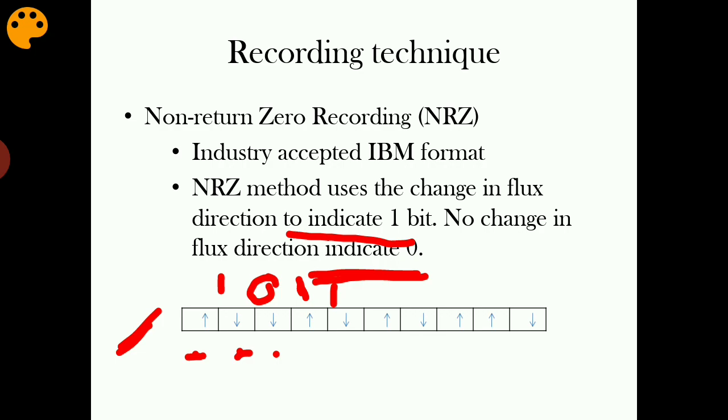What is the bit in the next unit? It is again a one because there is again a change in flux direction. Here we have a change in flux direction, so that means a one is encoded here. Again, here is a one. Here, it is a zero bit because there is no change in flux direction between these units. The NRZ method uses change in flux direction to indicate bit one.